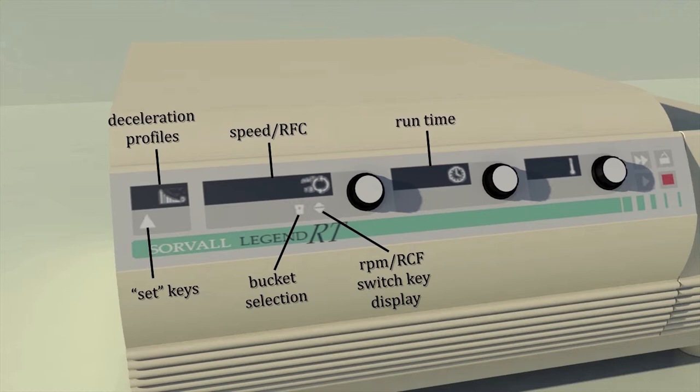If you have a pellet that packs tightly, you can decelerate more rapidly to save time. So this centrifuge has a number of profiles you can select using the set keys.